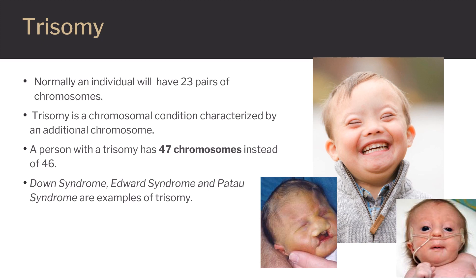Children affected by trisomy usually have a range of birth anomalies, including delayed development and intellectual disabilities. Individuals affected by trisomy of chromosome 21 — Down syndrome — usually experience low muscle tone, short stature, a flat nasal bridge, and a protruding tongue. People with Down syndrome have a higher risk of other conditions, including Alzheimer's disease and epilepsy. They also exhibit a characteristic rounded face, which tends to have a flat profile.